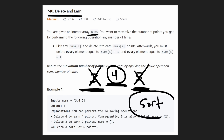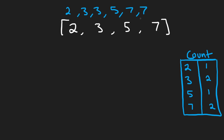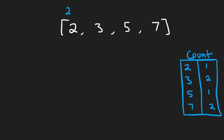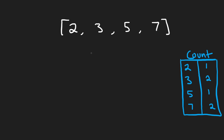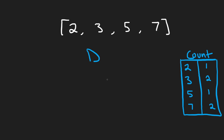Once you sort and eliminate duplicates, this problem becomes really similar to House Robber. And by the way, House Robber is a one-dimensional dynamic programming problem. Now let's actually explain the solution. Let's say the actual input array was two, three, three, five, seven, seven. But we sort it and eliminate all the duplicates, so we're actually left with a deduplicated array, and we make sure to count how many we had — we keep our counts in a hash map. So now we want to know what's the maximum amount we could possibly earn.